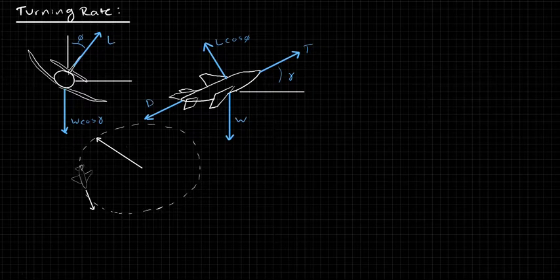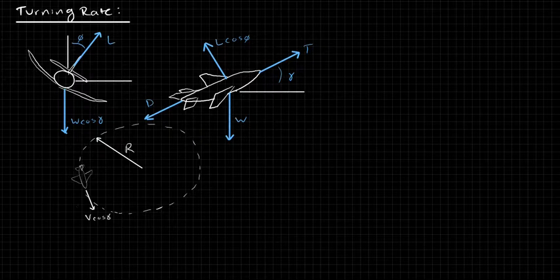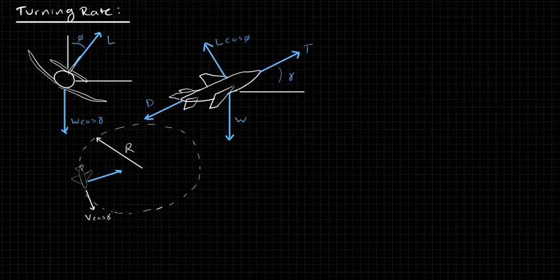And then finally, on our figure down here, we have our turning radius. Here we have V cos gamma, which is our tangential velocity. And then we're going to label one force on here, and that is pointing inward, and that is L sine phi.